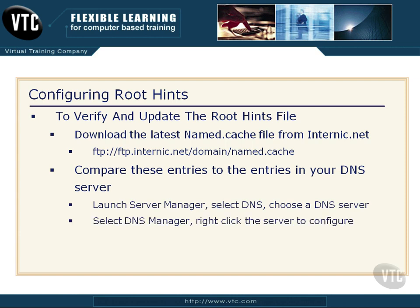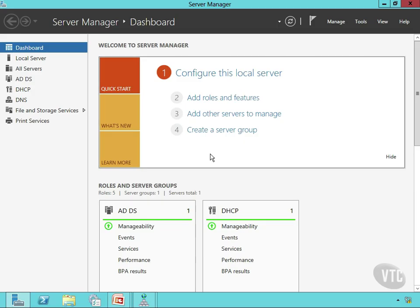Now, how do you see your entries? You'll launch the Server Manager, choose your DNS tool, then choose a server. Then you'll right-click that server to configure it, choose Properties, and select the Root Hints tab. Let's jump out to the Server Manager right here and I'll show you.